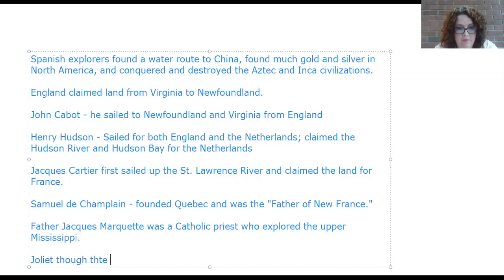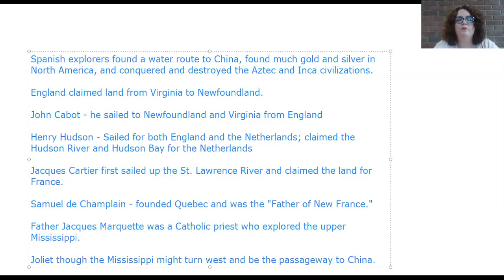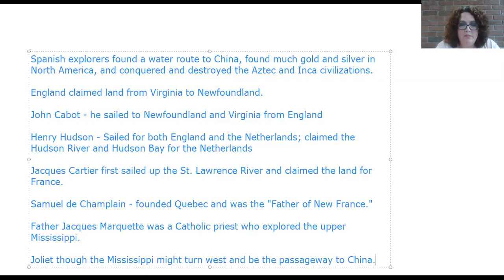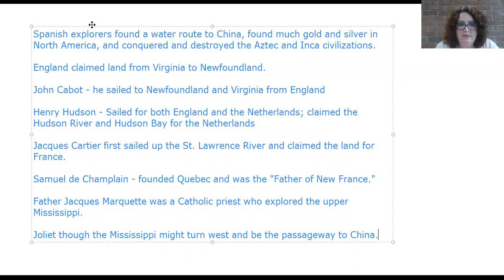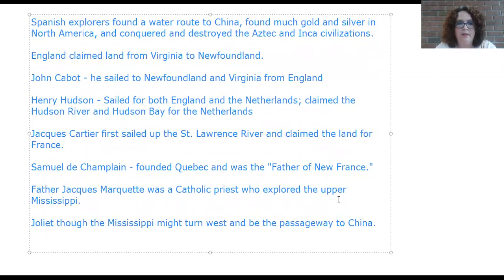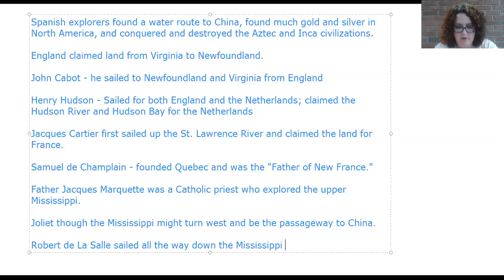Jolliet thought the Mississippi might turn west and be the passageway to China — his theory was that if you sailed up the Mississippi it would lead out to China, not realizing there was a lot more land on the other side. Robert de la Salle sailed all the way down the Mississippi to the Gulf of Mexico.